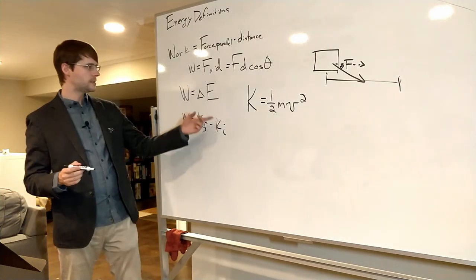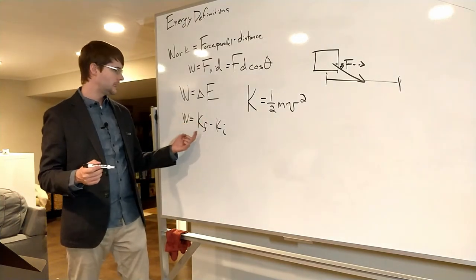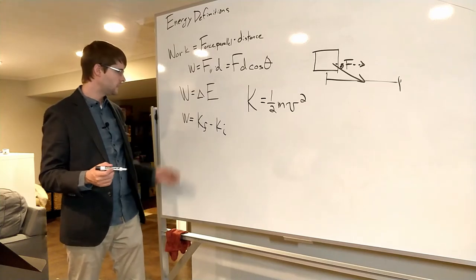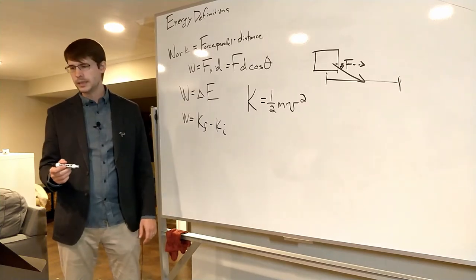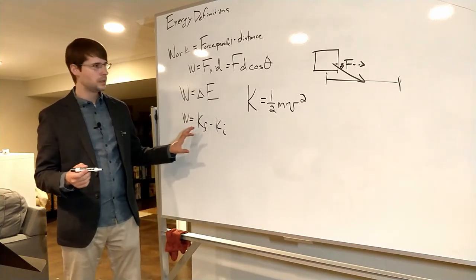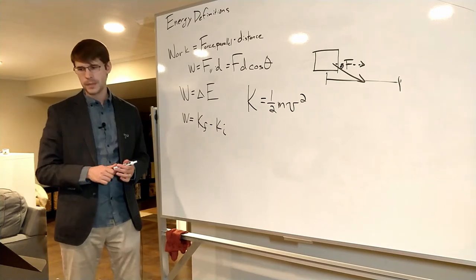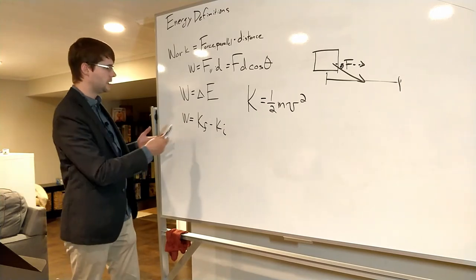We rewrite this energy to look at only the kinetic energy in an object: its final minus initial kinetic energy would be equal to the work. This is our definition, sometimes called the work-energy theorem, where we talk about the relationship between both of these.